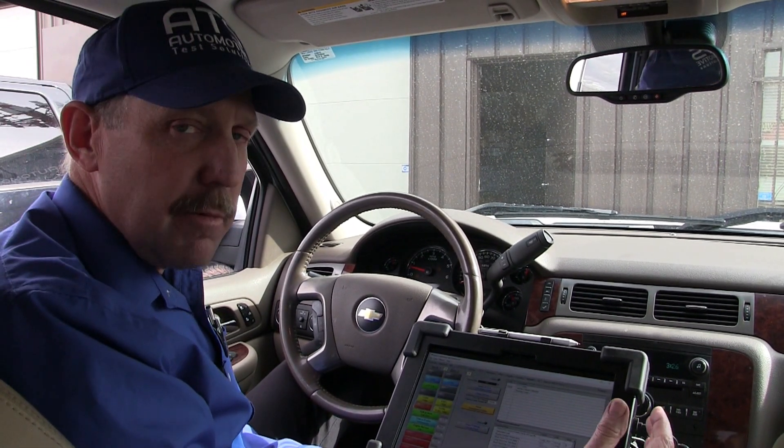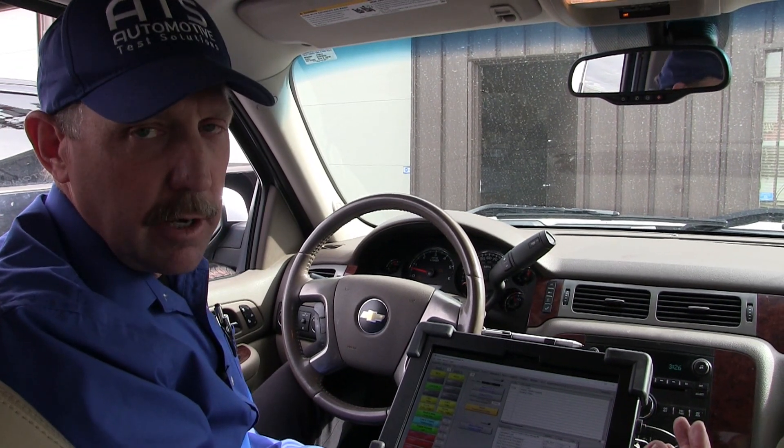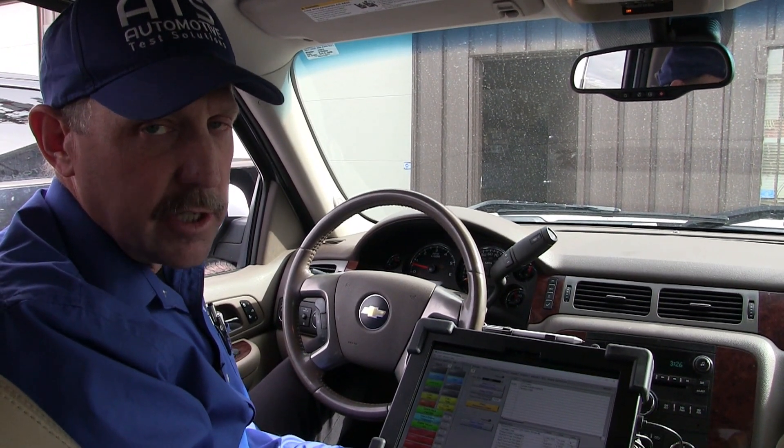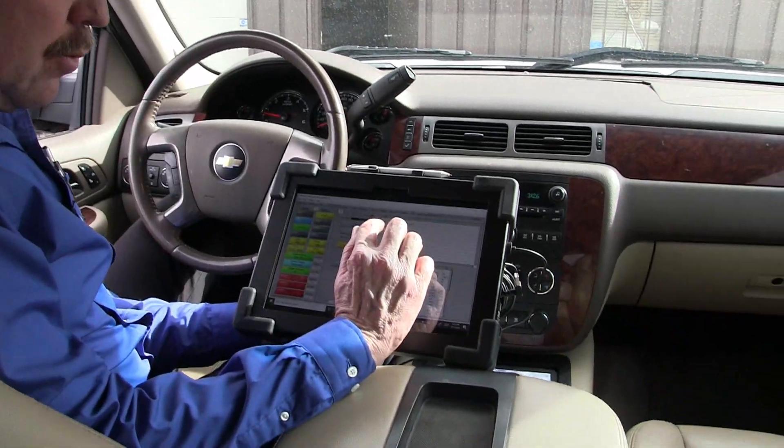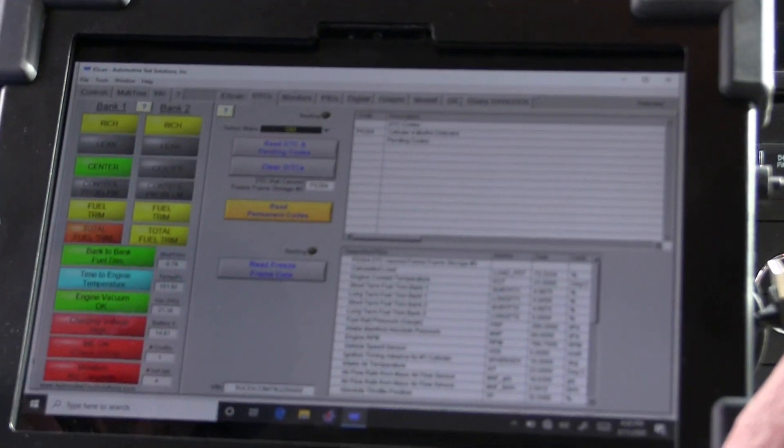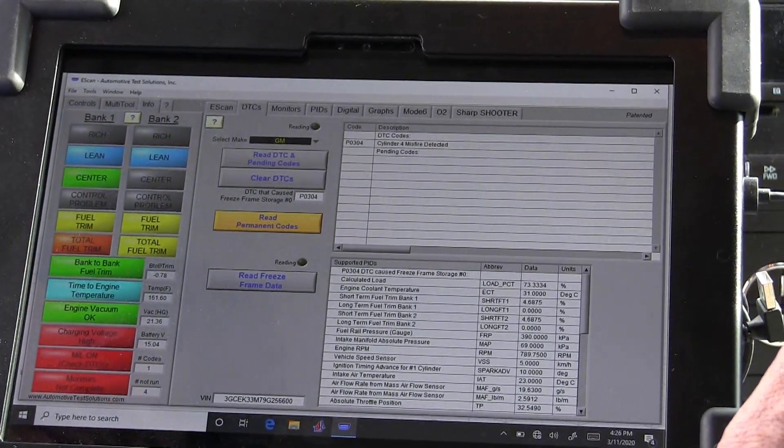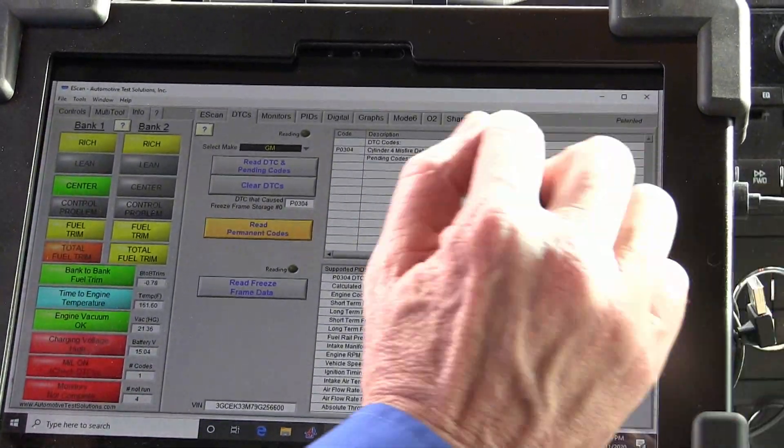This engine has an intermittent misfire occurring, so the first thing we want to do is scan the onboard system. When we scan it, we see that we have a misfire on P0304, indicating that Cylinder 4 is a misfire.